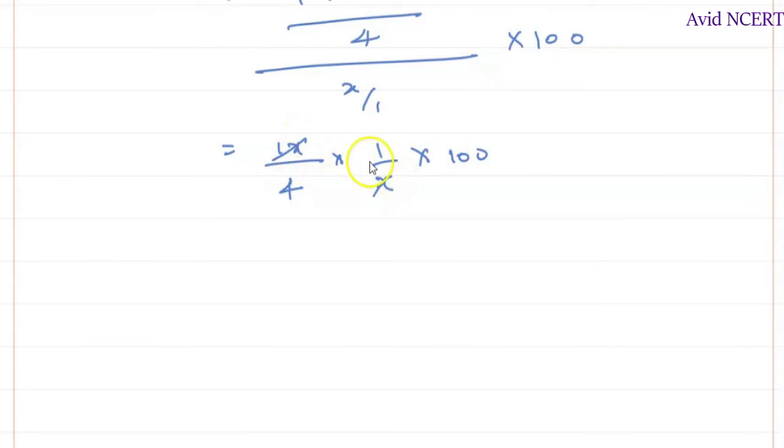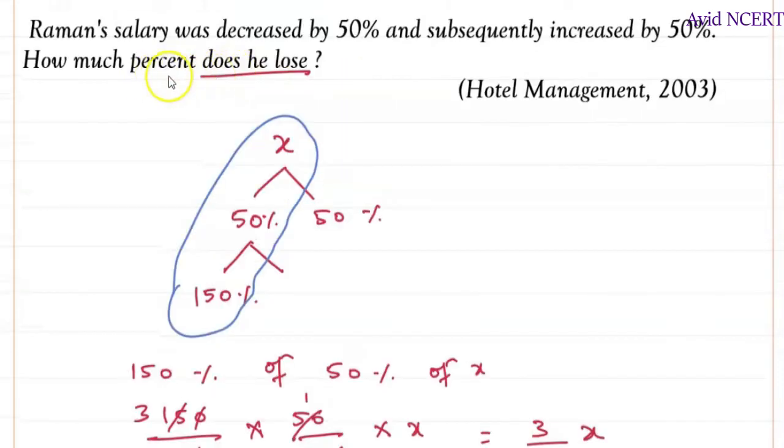So x x gets cancelled which is 4, 25 times so which is equals 25 percent. The percent he lost is 25 percent.